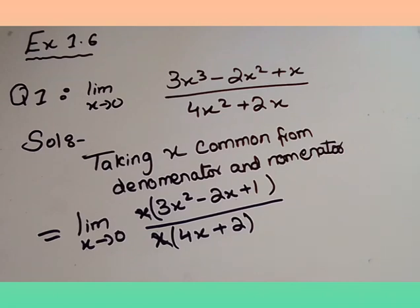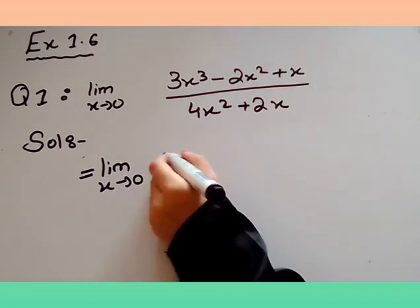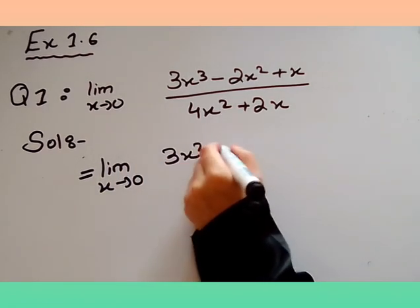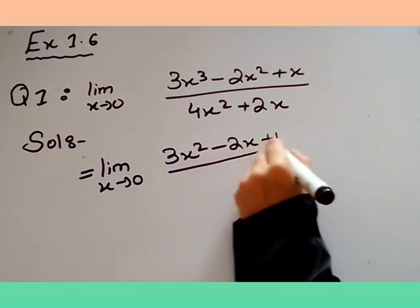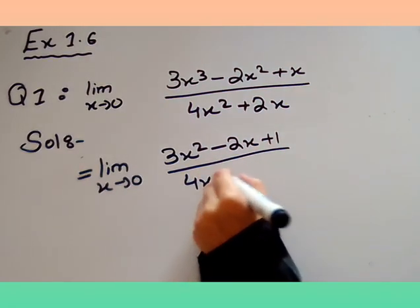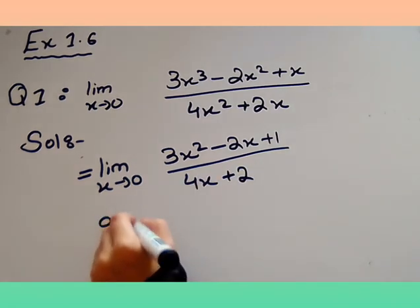Let's go to the question. What we have left, we will write. So limit x→0 of (3x² - 2x + 1) divided by (4x + 2). Now we will apply limit here. If we apply limit, our 1/0 answer will not come, so infinity answer will not come.